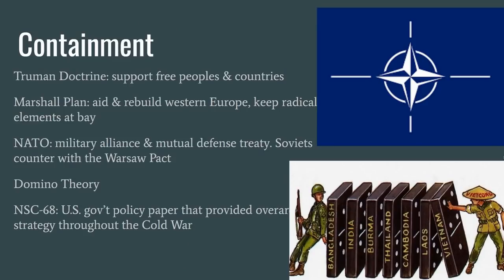Containment is the overarching U.S. Cold War policy during the entirety of the Cold War, with different doctrines and strategies within it. The first implemented Truman Doctrine was to support free peoples from succumbing to communism, leading directly to aid in Turkey and Greece. The Marshall Plan directed American aid towards countries like West Germany and France to help them recover from World War II and keep radical elements at bay. NATO was established as a military alliance and mutual defense pact to deter Soviet aggression. Another part of containment is the domino theory, a huge cause of the Vietnam War — the idea that if one small country falls to communism, neighboring countries will follow. Finally, the important policy paper NSC-68 provided an overarching Cold War strategy.